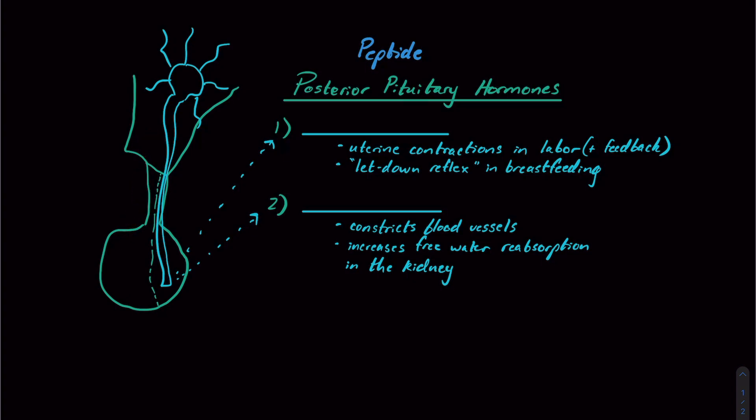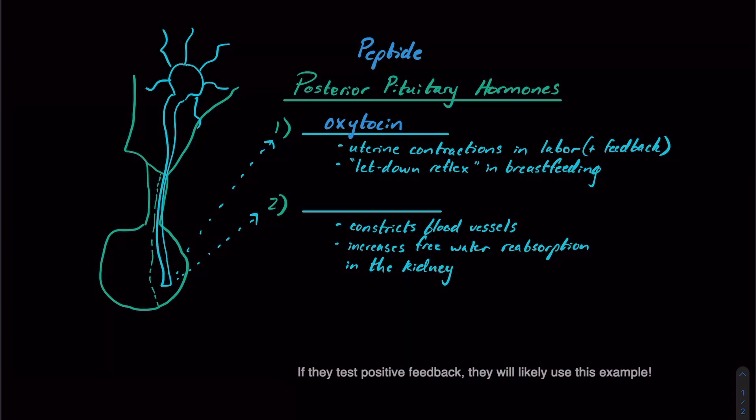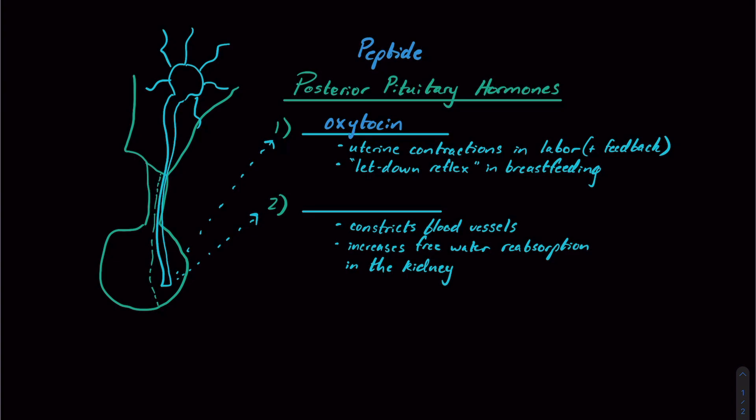And the two peptide hormones that we're going to take a look at are oxytocin. And the most likely thing they're going to test you on with oxytocin is that it stimulates uterine contractions and labor. And that's one of the few examples that we have physiologically of positive feedback. So that's a very likely test question, as well as stimulating what we call the letdown reflex in breastfeeding or promoting milk secretion during breastfeeding.